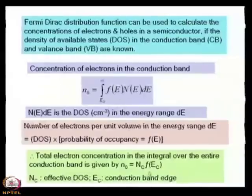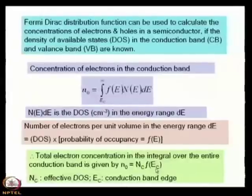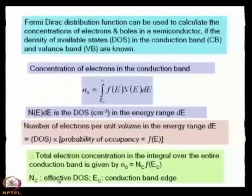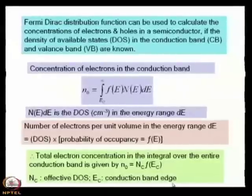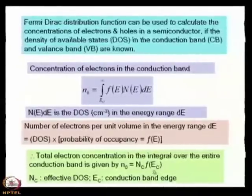If you integrate n(E) dE over E_c to infinity, that gives you the effective density of states N_c. E_c is the bottom of the conduction band. From E_c to infinity — the meaning is from the bottom of the conduction band to the upper limit of the band. Infinity is not the practical limit here; that is why we use the effective density of states. So remember this expression: N₀ = N_c × f(E_c).